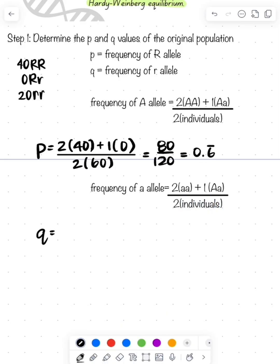That's going to give me my Q being two times 20, plus one times zero, because there's 20 individuals that are homozygous recessive and zero that are heterozygous. Then that's two times 60, because it's 60 total individuals. That gives us 40 over 120, which is one-third, which is 0.3 repeating.